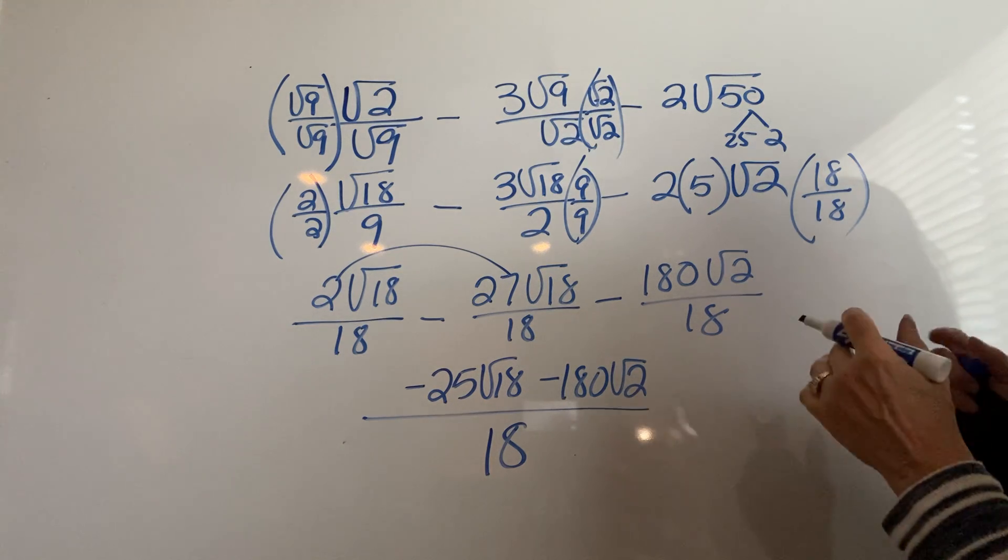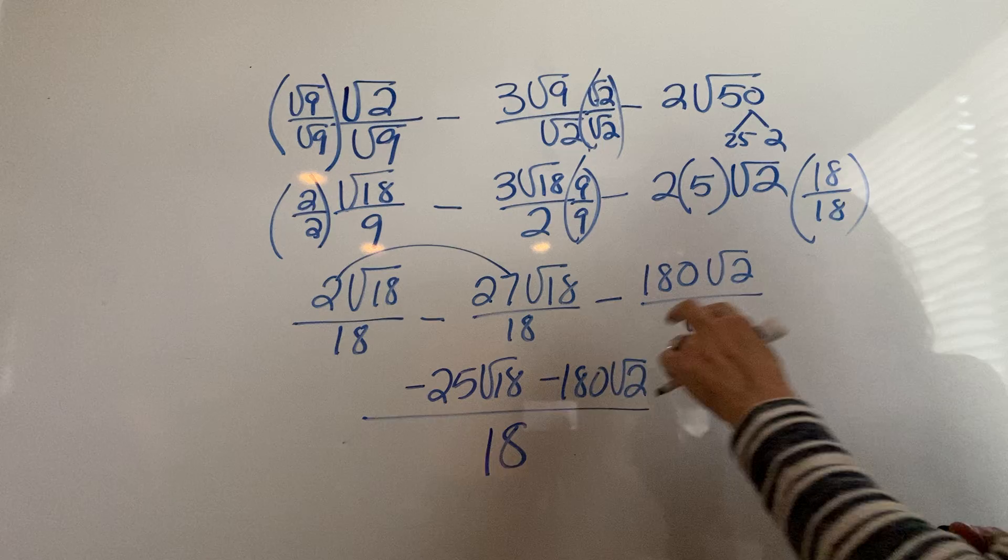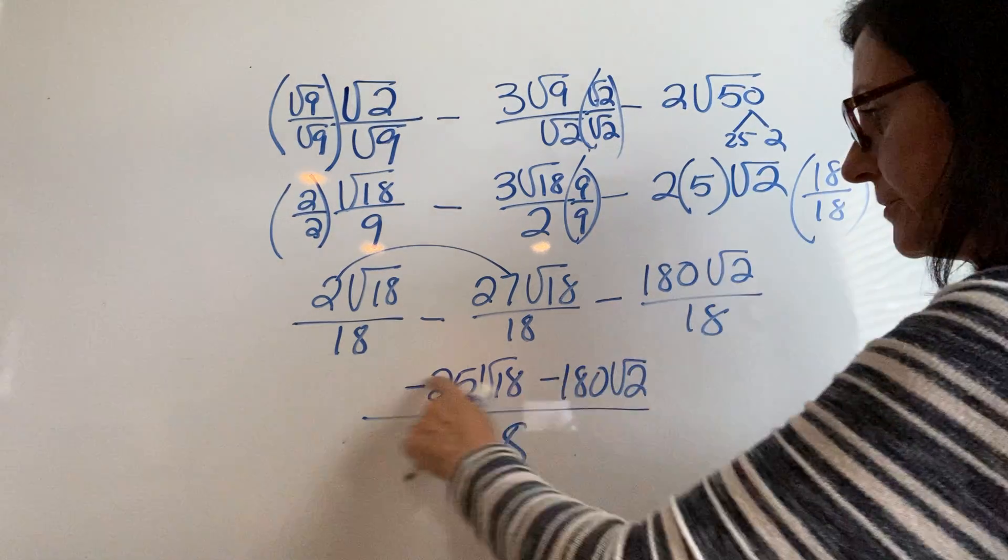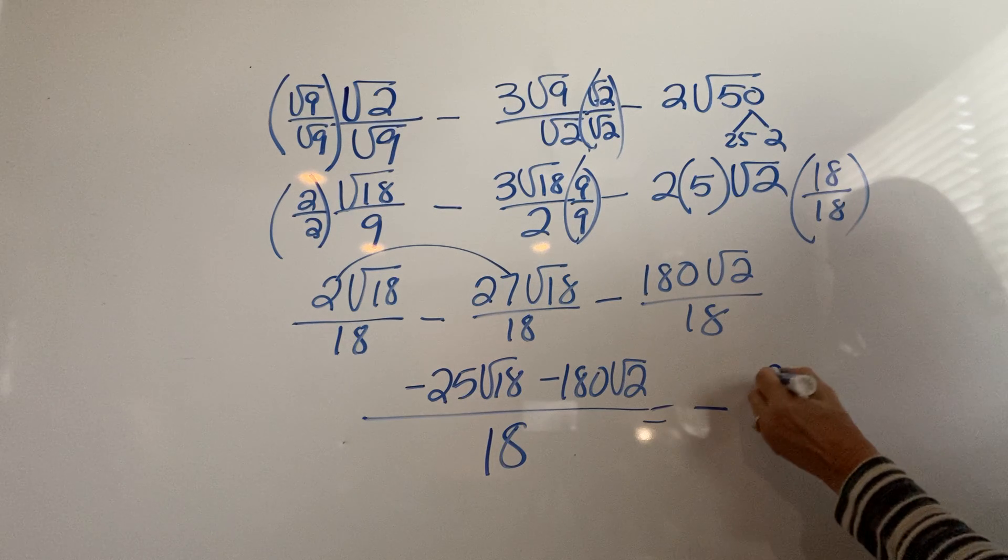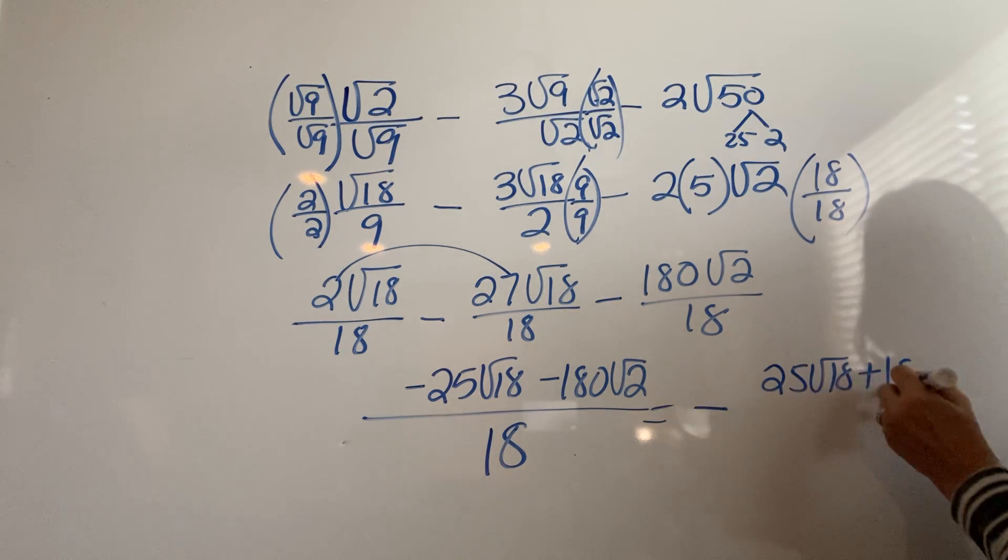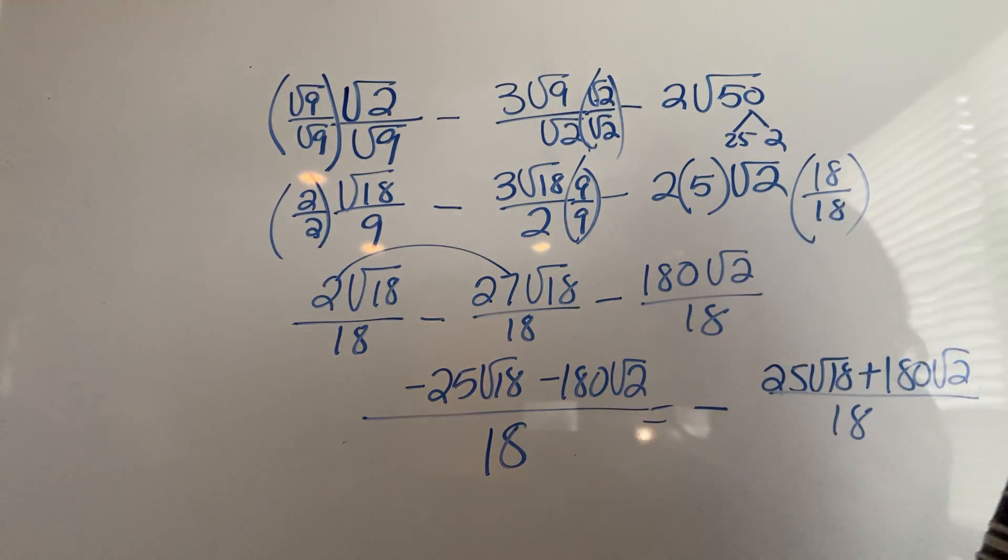I'll write them all over the one common denominator. It's going to be negative 25 square root of 18 minus 180 square root of 2. Really the proper way to write this, I would move those negatives out front, and I'd put 25 square root of 18 plus 180 square root of 2 over 18.